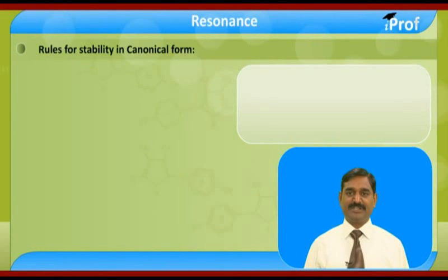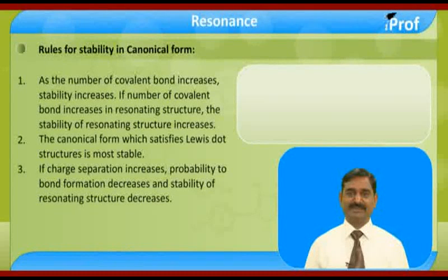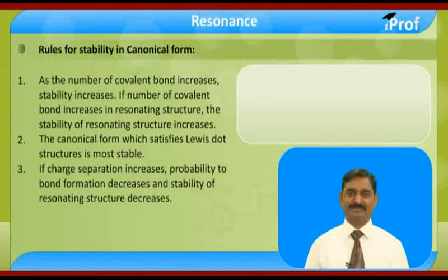Rules for stability of canonical form. First, as the number of covalent bonds increases, stability increases. If the number of covalent bonds increases in a resonating structure, the stability of the resonating structure increases.